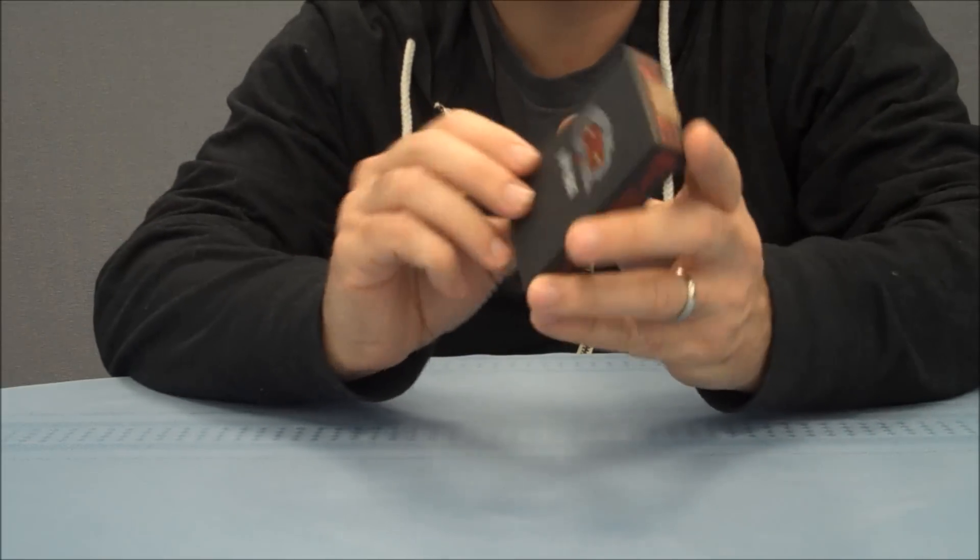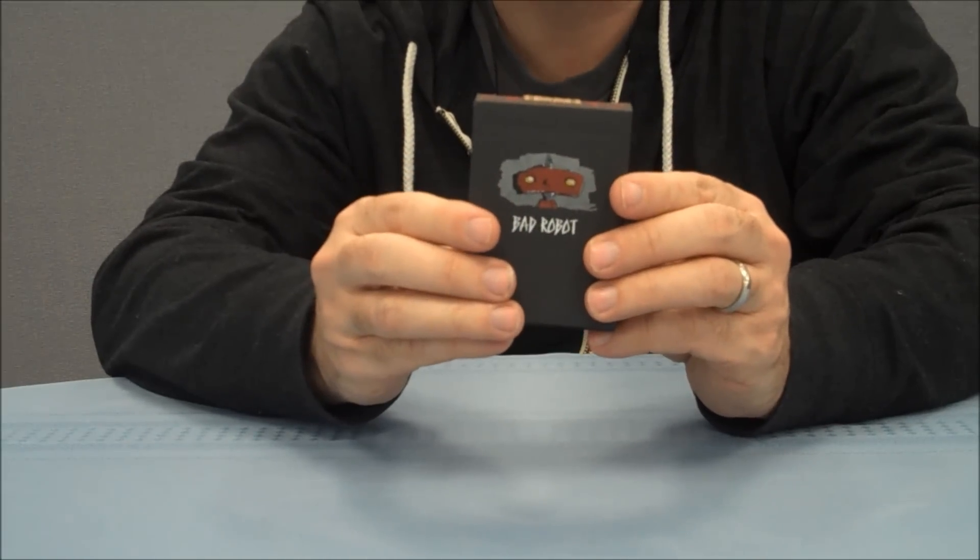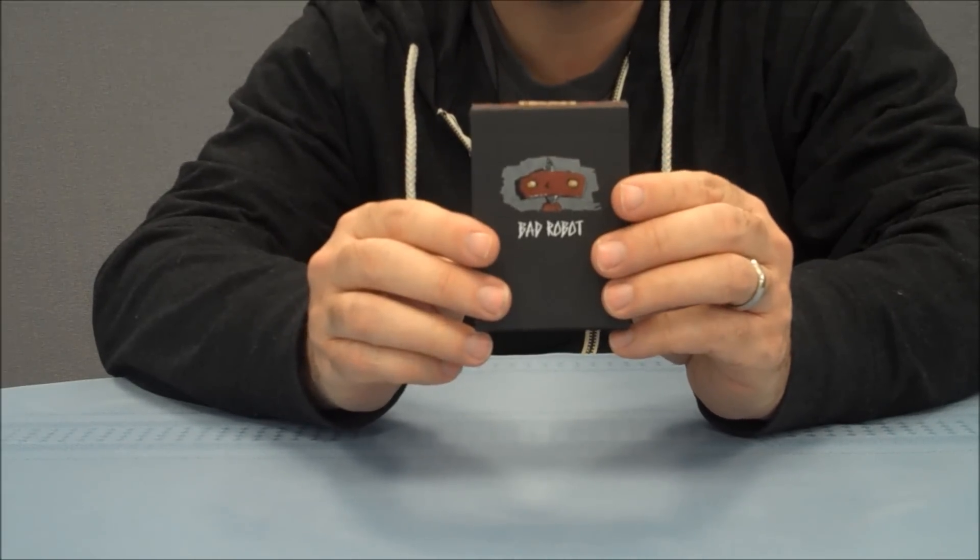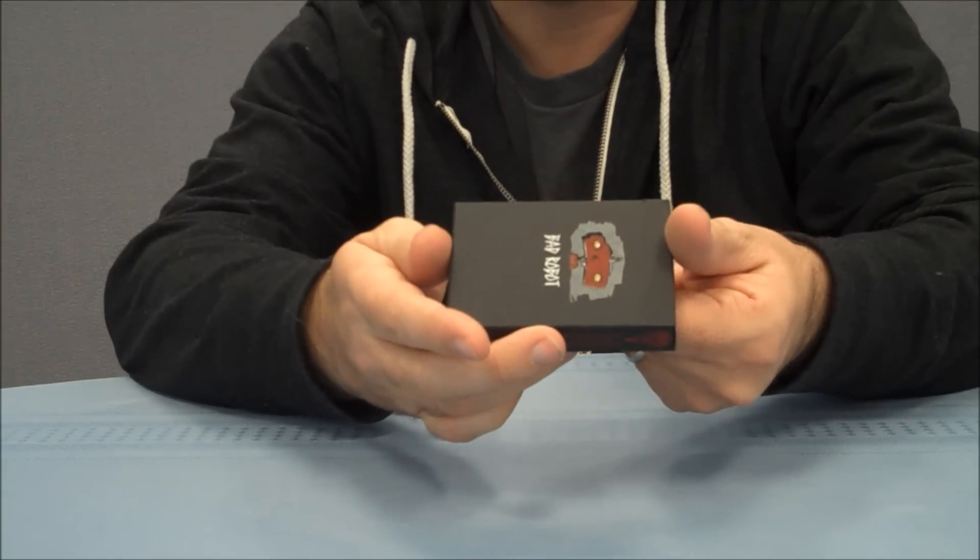When you first open it, the tuck case has a flat black finish. It has the bad robot logo on the front, which is J.J. Abrams' film company. On the side, it does say J.J. Abrams and Theory 11. And on the other side, it says that it's a product of bad robot.